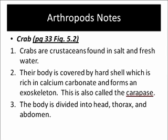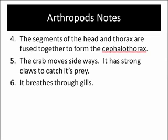In the crab, the exoskeleton can also be called the carapace. The body is divided into the head, thorax, and abdomen, similar to that of the prawn. And similar to that of the prawn, the segments of the head and thorax are also fused together to form the cephalothorax. Crabs move sideways.